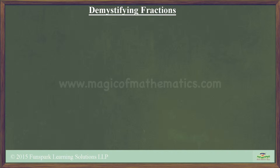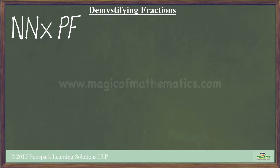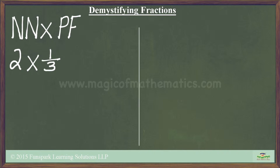To begin with, let us look at the first case, namely a natural number times a proper fraction. This happens to be the easiest one to conceptualize. To understand this multiplication problem better, let us take a small digression into the world of natural numbers. When we deal with natural numbers, one way we are used to looking at multiplication is to think of it as repeated addition.